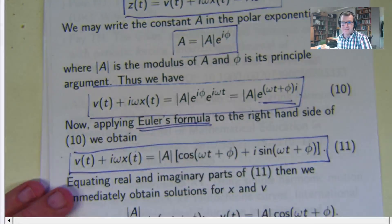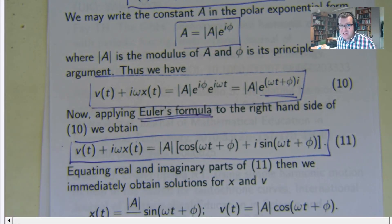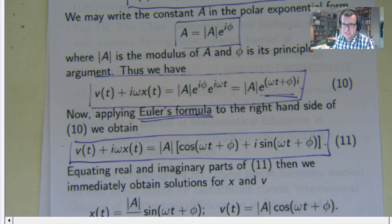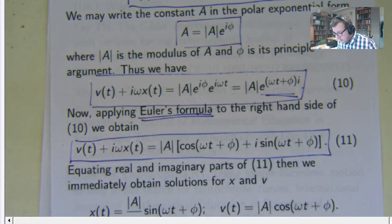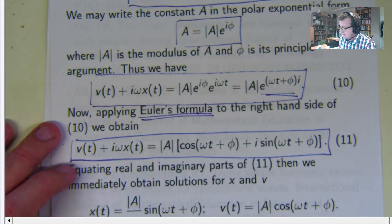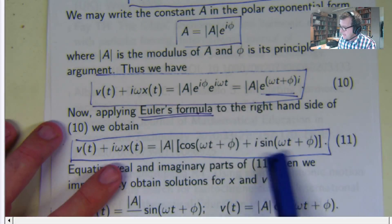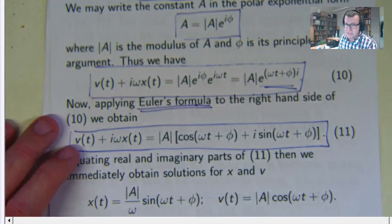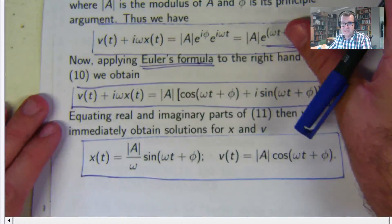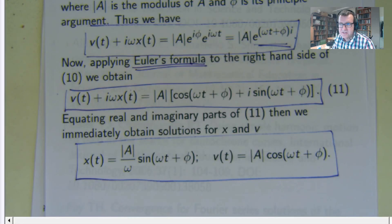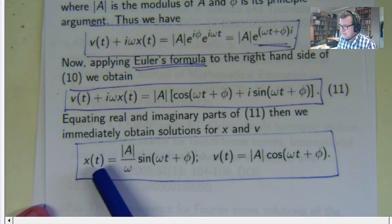We still haven't found V and X. So how do we do that? I'm going to draw on Euler's famous formula, which relates the exponential with cosine and sine — essentially replacing the exponential with cosine of that plus i sine of that. Why would I want to do that? Because I can simply write down the answer for X and V. I equate the real parts and the imaginary parts: V is going to be the modulus times cosine of that, and X is going to be the sine part divided by omega. And that is exactly what we have obtained.